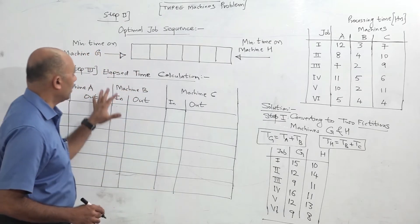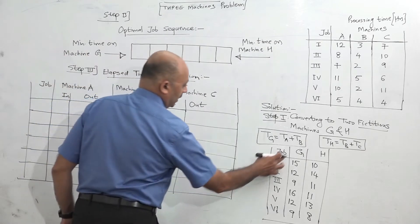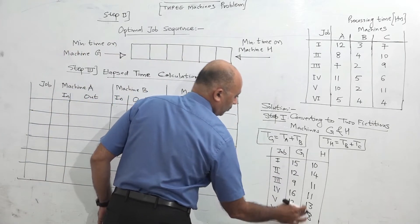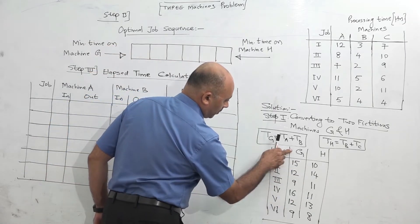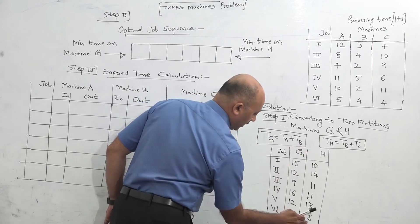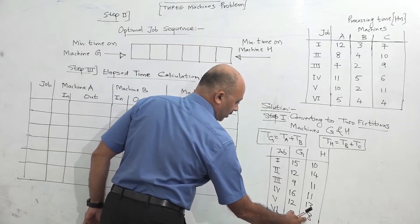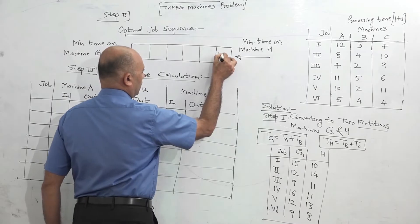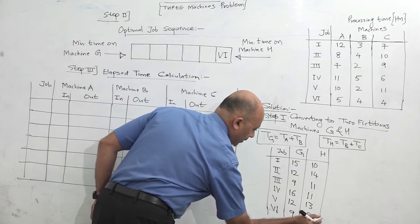Now step 2: we will determine the optimal job sequence. The rule is: if time is minimum on G, assign from the left side; if time is minimum on H, assign from the right side. Comparing all values, the minimum is 8 for job 6 on H, so job 6 goes from the right side. Job 6 is now eliminated.